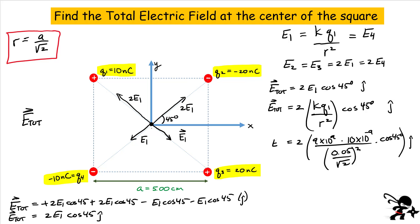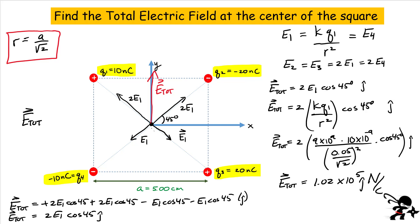You have to be careful when you plug everything into the calculator. At the end of the day, when I calculate E-total, I get a value of 1.02 times 10 to the 5 newtons per coulomb in the j-hat direction. The electric field points in the vertical direction. We used symmetry to simplify the vectors, used the fact that some charges were twice as much as others making those vectors twice as big, and argued that all x-components cancel out — leaving only a vertical electric field of magnitude 1.02 × 10⁵ N/C. Thanks for watching.